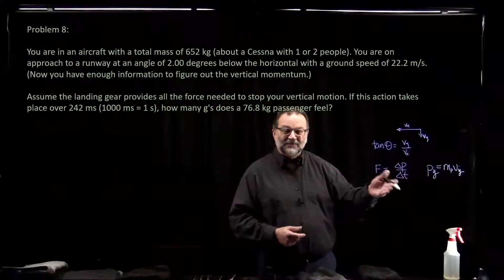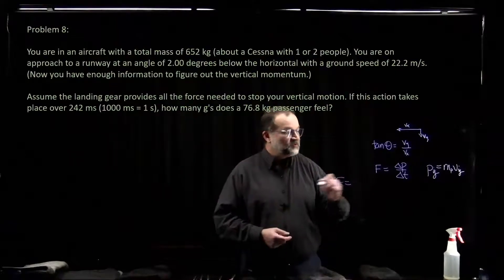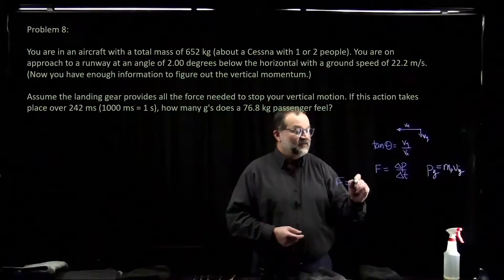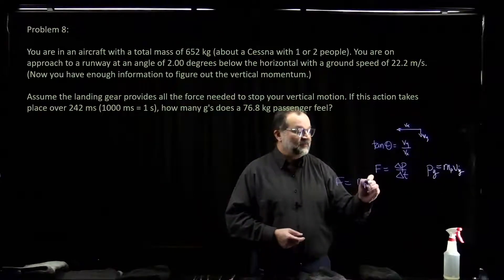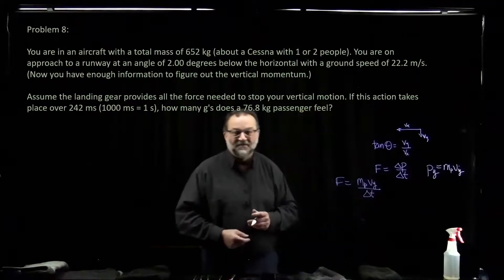We've got the time that it takes place over. And so we get the force on the passenger. Force on the passenger is going to end up being mass of the passenger times your vertical velocity over this delta t. So that's the force on the passenger.